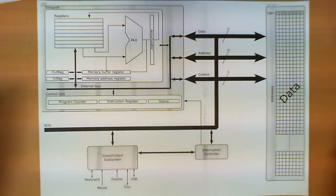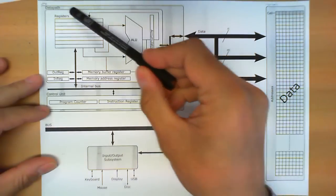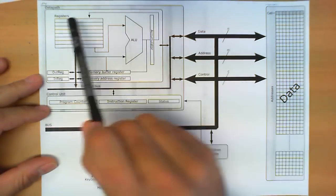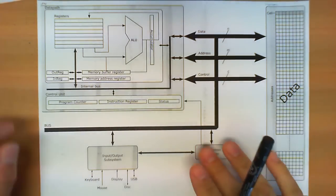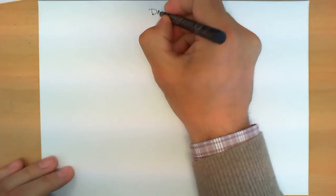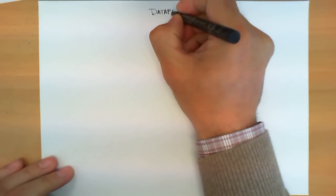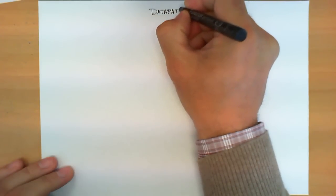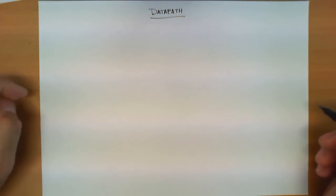In this video we are going to explain one of the parts of today's computer system. More precisely, this box over here, which is inside the CPU, which we call the data path. The data path, as its name suggests, is a place in the computer in which the data is being manipulated.